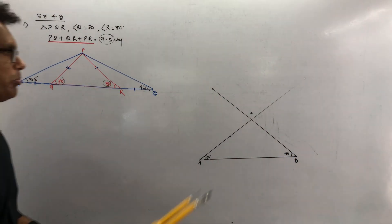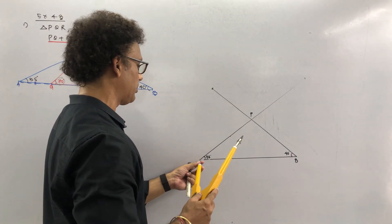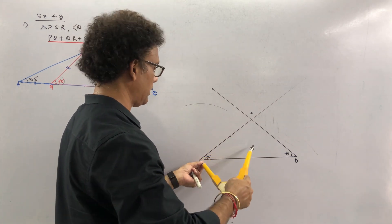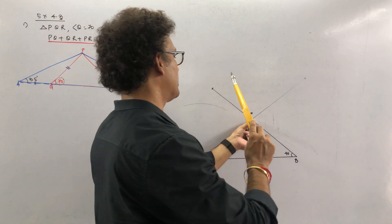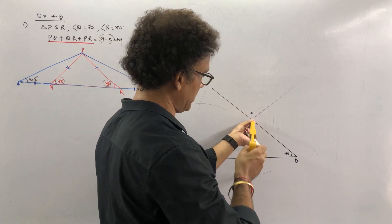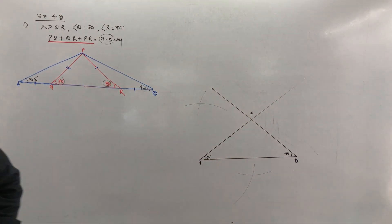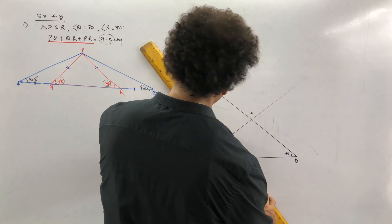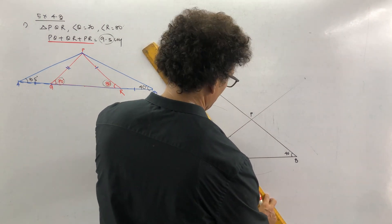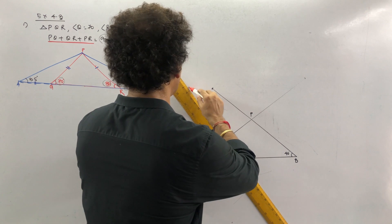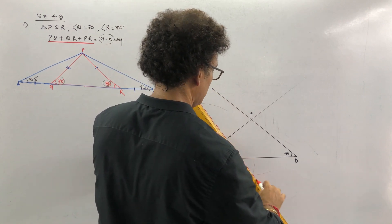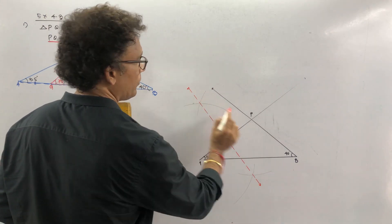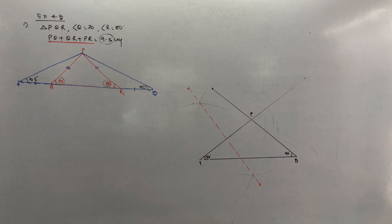Now we are bisecting the two sides into two equal parts. Take your compass at more than half and draw arcs. Go to point P, cut the previous arc. Now we will draw a line — that is to show the bisector. Hold it over here, and you can draw a dotted line. Now we will draw a bisector of that side also — bisect PB as well.